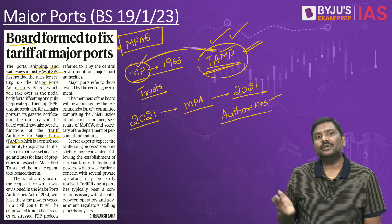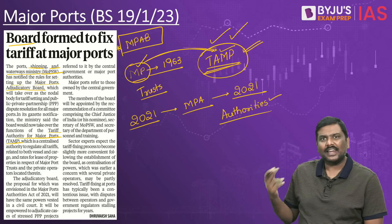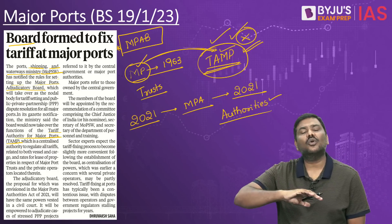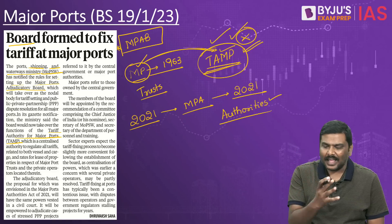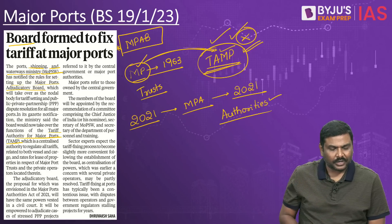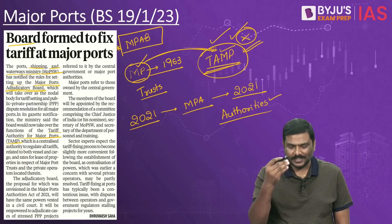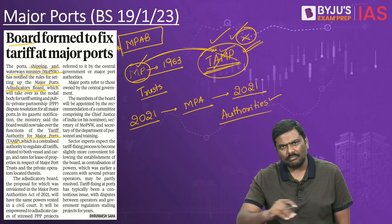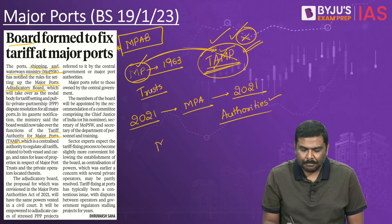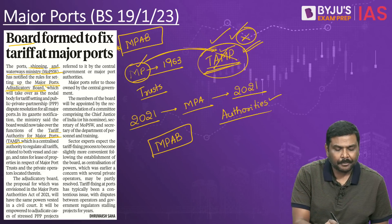The question arose: should the port authorities still approach TAMP to get tariffs notified? Government decided to restructure the whole tariff concept — rather than approaching TAMP, TAMP would be removed and subsumed under a new authority: the Major Port Adjudicatory Board (MPAB). In simple terms, TAMP has been discontinued and replaced by the Major Port Adjudicatory Board.